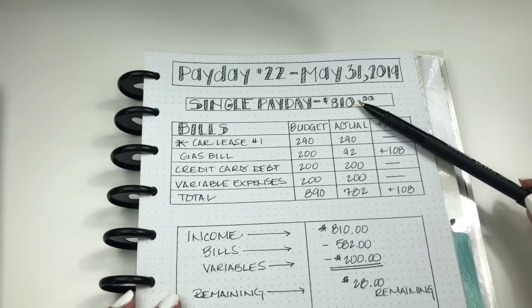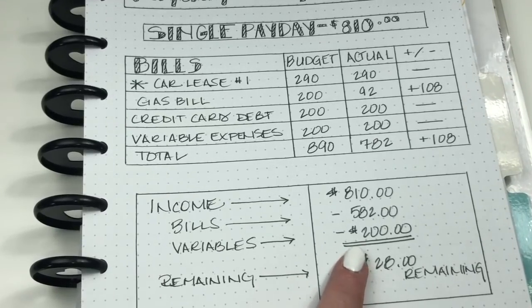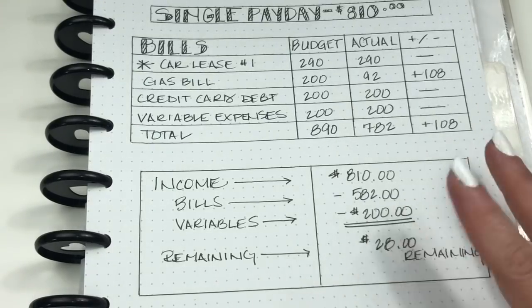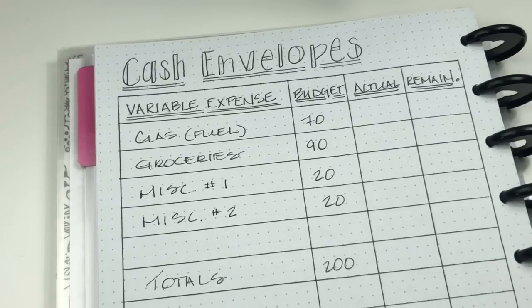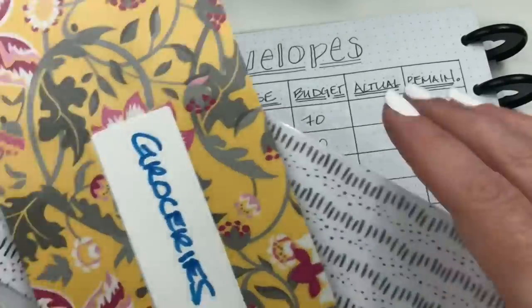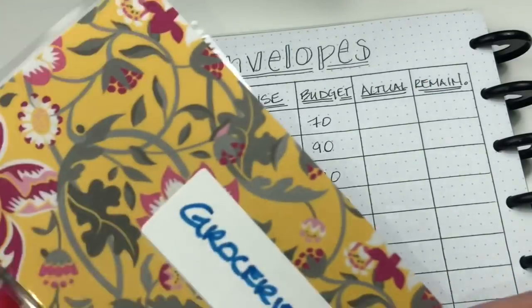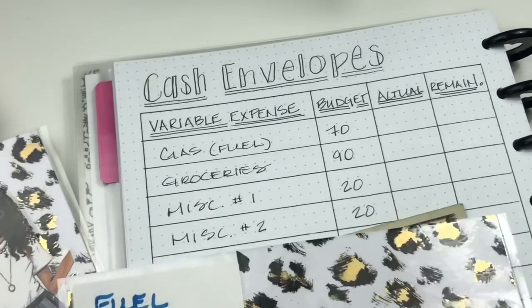Last week we had a single payday, meaning only my husband got paid, so we brought in eight hundred and ten dollars. Our variable expenses were really low, and for this coming week they're much much higher, so it balances out from week to week. We had two hundred dollars and only four categories, which was super manageable. I'll show you and explain the envelopes I used, which I relabeled for easier identification.